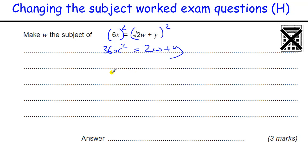And then when I square this side it just gets rid of the square root, and that's the major step there, that's the tricky bit. Then I just take away the Y, give me 2W, and then I divide by 2, get W equals 36X squared minus Y all over 2.